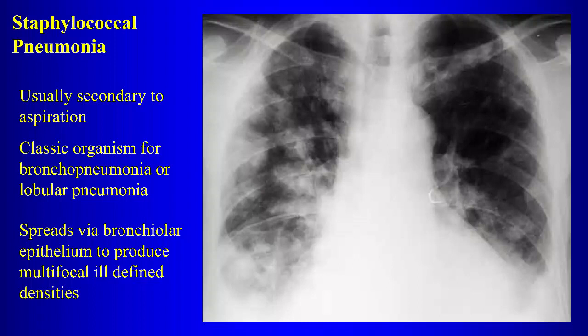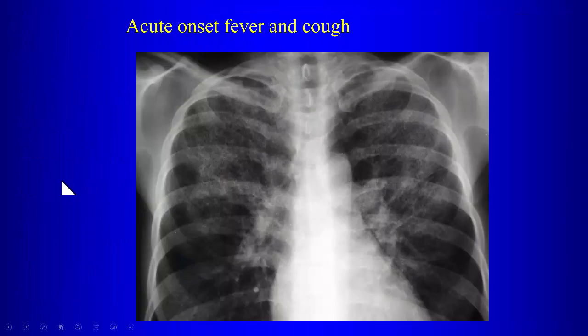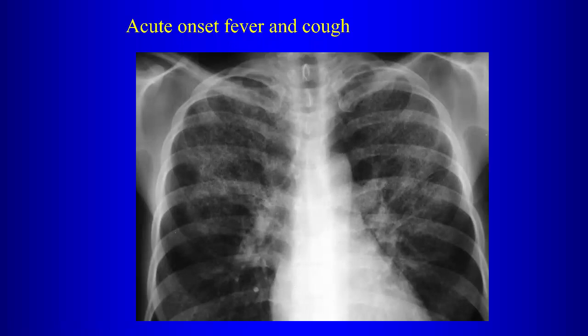Bronchogenic spread via the airways produces multifocal ill-defined consolidation. Now if this patient has fever and cough, what is different about the appearance here? There's ground glass and also a reticular pattern — lines within the lung. This is called atypical pneumonia, used when pneumonia doesn't look like typical airspace disease with consolidations and air bronchograms.